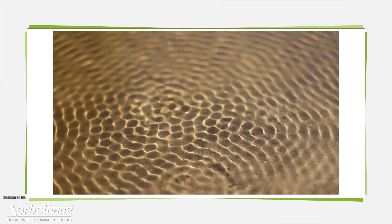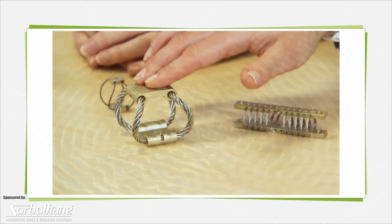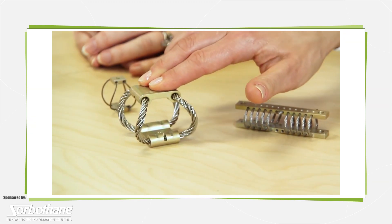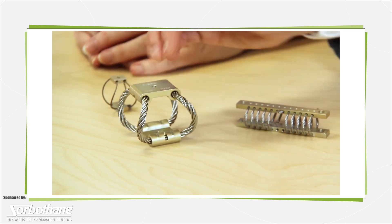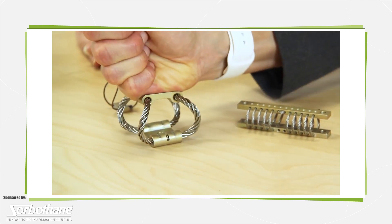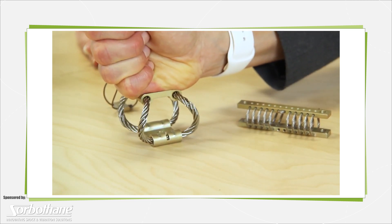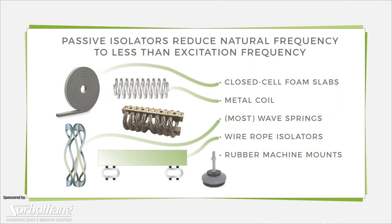Passive vibration mitigation includes passive isolators such as closed cell foam slabs, metal coil or wave springs, wire rope isolators common in military applications, and rubber machine mounts.